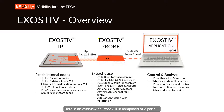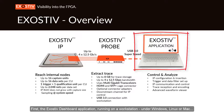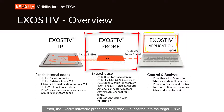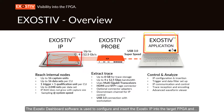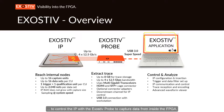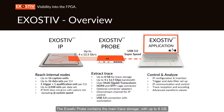Here is an overview of Exhaustive. It is composed of three parts: first, the Exhaustive dashboard application running on a workstation under Windows, Linux, or Mac; then the Exhaustive hardware probe; and the Exhaustive IP inserted into the target FPGA. The dashboard software is used to configure and insert the IP into the target FPGA, and to control the IP with the probe to capture data. The Exhaustive probe contains the main trace storage with up to 8 GB.